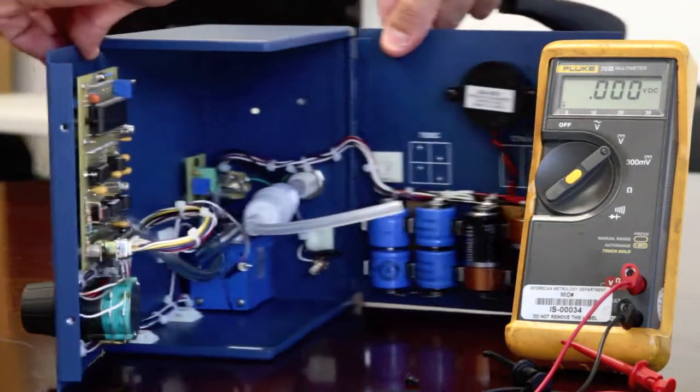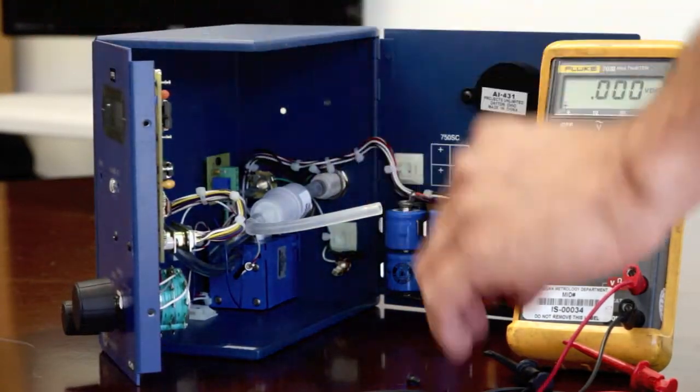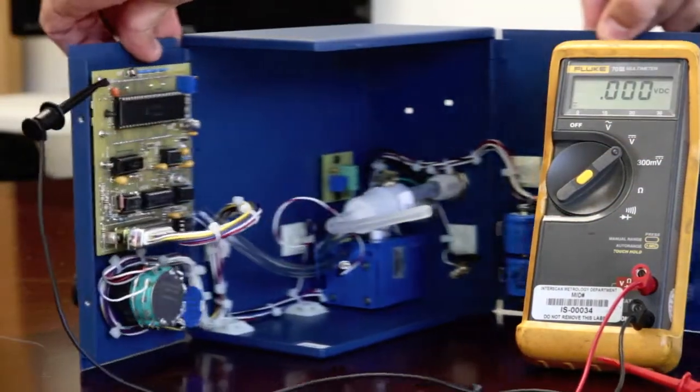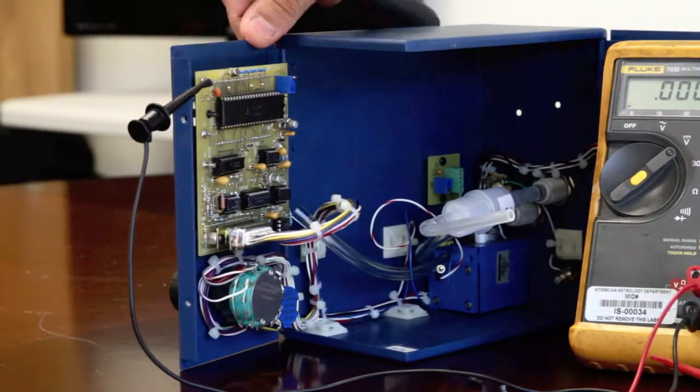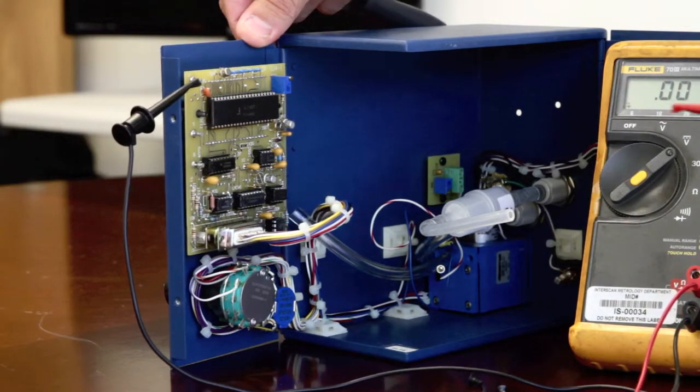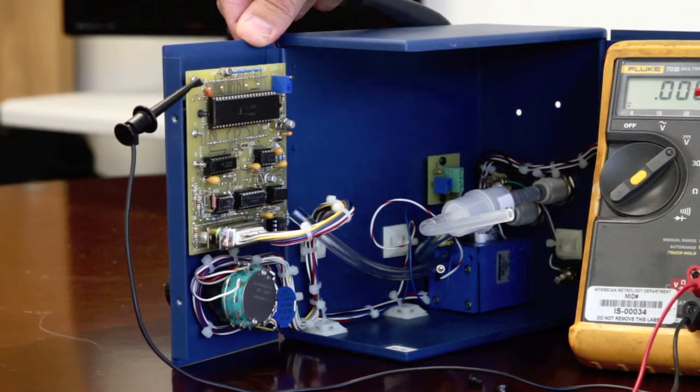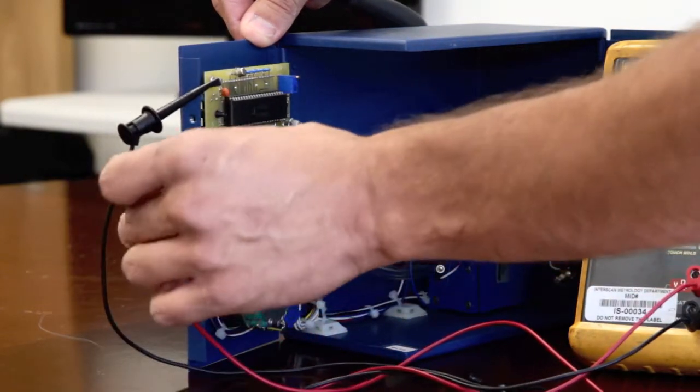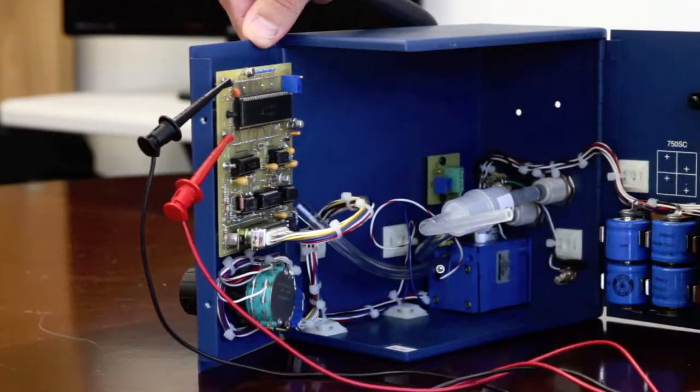Connect the negative lead of the digital voltmeter to ground. This is terminal G on the circuit board. Connect the positive lead of the digital voltmeter to S on the circuit board.